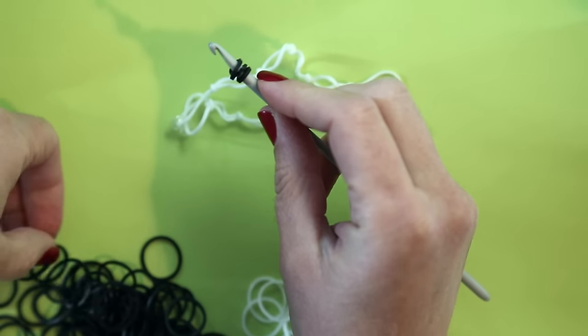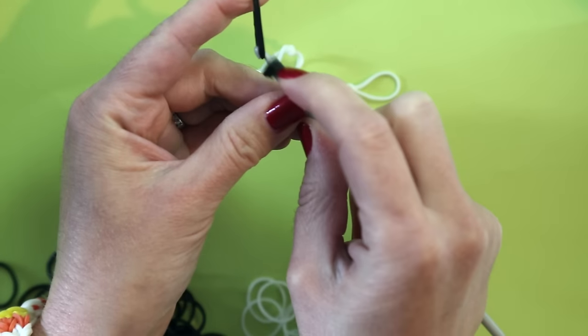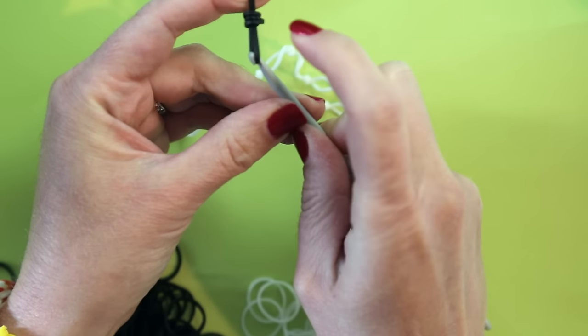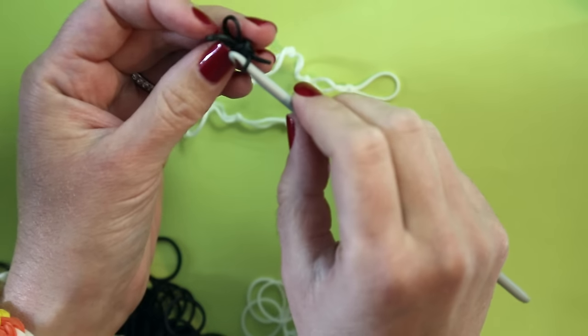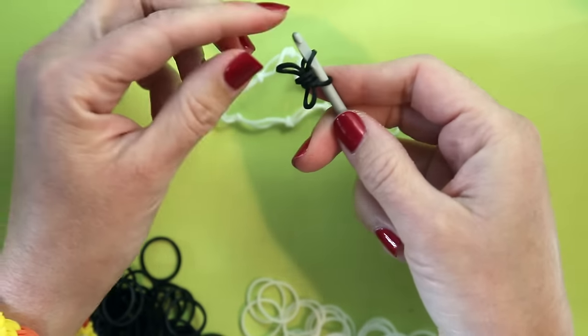Then you're going to take two rubber bands for the spider's legs, pull them tight and push that tripled over band to the center. Put your hook through two of the loops like that.